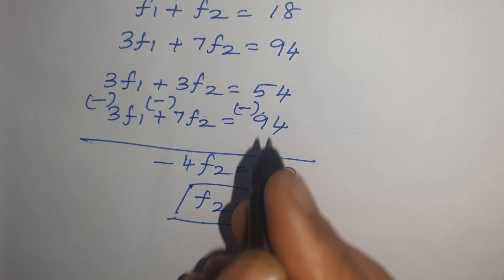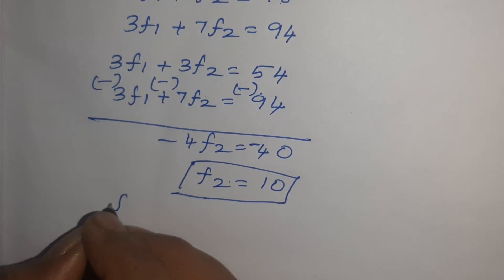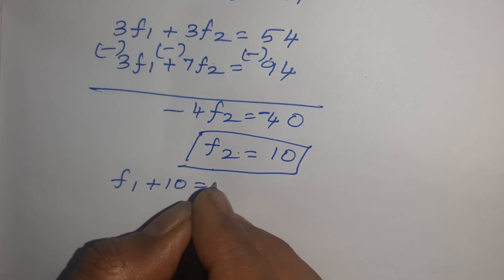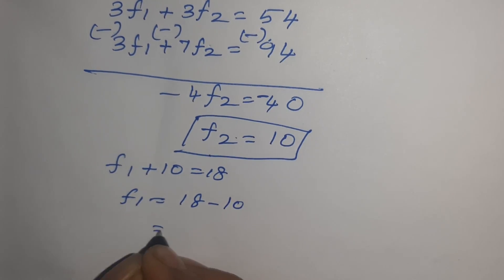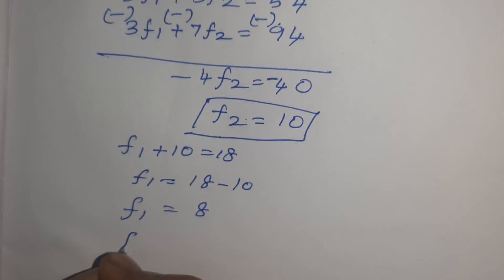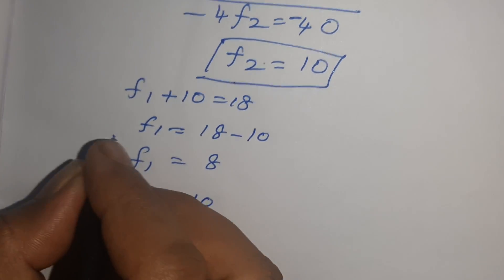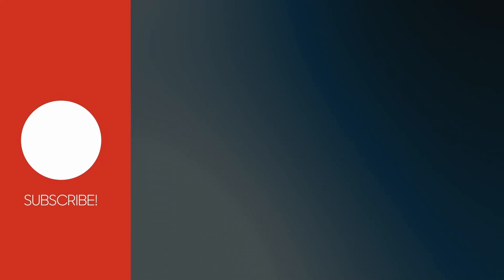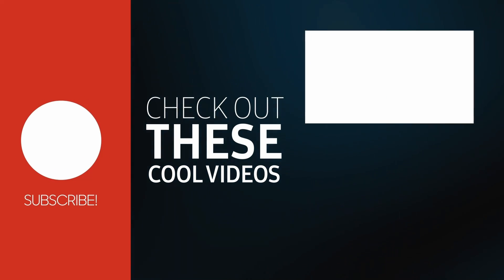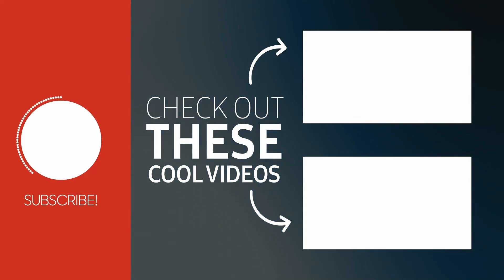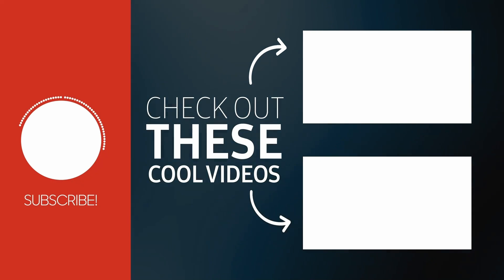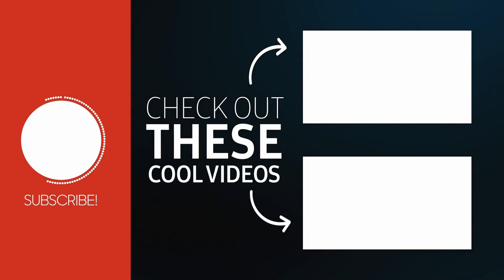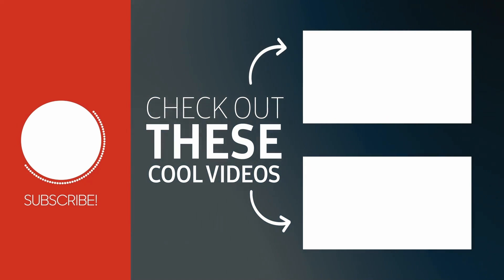Now substitute F2 equals 10 in equation number 1. So F1 plus 10 equals 18. F1 equals 18 minus 10, that equals 8. So F1 equals 8 and F2 equals 10. At last, write the answer within the box.